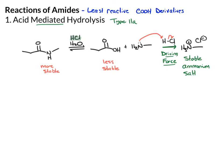This also explains why you need a full equivalent of acid, because for every one mole of amide you start with, you generate one mole of amine, and that reacts with one mole of acid to give the ammonium salt. So this requires a full equivalent of acid.